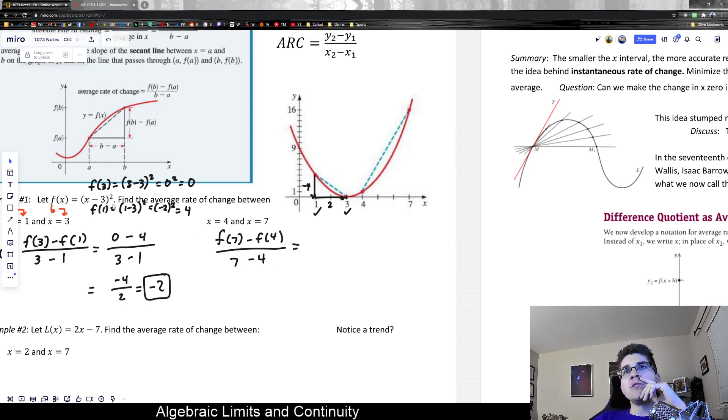Now, f(7), I can probably do that one in my head. That would be plugging in 7 here, which would be 4², 16. f(4) would be plugging in 4. 4 - 3 is 1, 1² is 1.